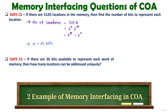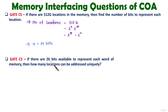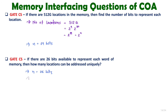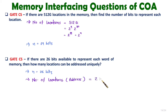In the second question, if there are 26 bits available to represent each word of memory, then how many locations can be addressed uniquely? So here, how many bits are available? 26 bits. Based on that, we can identify the number of locations. Number of locations means number of addresses. So number of addresses, based on number of bits, is 2 to the power N, which is 2 to the power 26. But the answer will not be given in the form of 2 to the power 26.